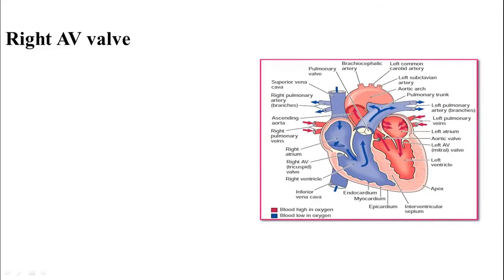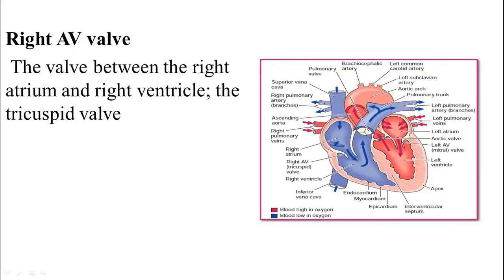The right atrioventricular valve consists of three leaflets and is situated between the right atrium and the right ventricle. Its function is to allow blood flowing from the low-pressure chamber of the right atrium to the high-pressure chamber of the right ventricle. The right ventricle reduces the pressure inside it, and blood flows downward — approximately one-third of the blood passively, and the remainder by contraction of the right atrium into the right ventricle. Another name is the tricuspid valve, a three-leaflet valve.